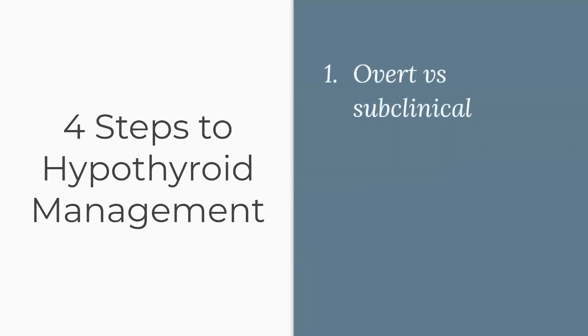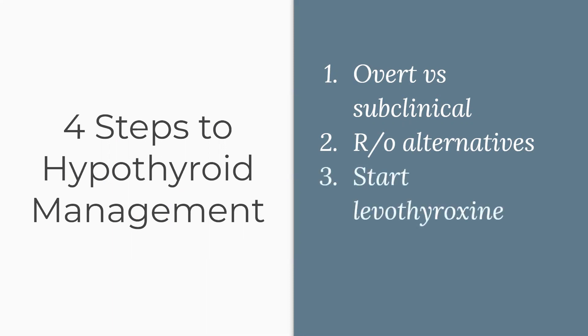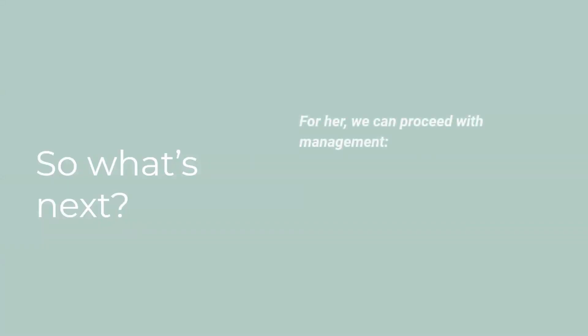So the four steps to hypothyroid management: number one, overt versus subclinical — high TSH with low T4, or high TSH with normal T4 and no symptoms? Number two, rule out alternative causes — does the clinical picture make sense? Number three, start levothyroxine — the main treatment. Number four, monitor labs and symptoms. Going back to Janelle: we can proceed with management. Her TSH is less than 10 but she is symptomatic — weight gain, irregular menses, and fatigue. She's also had treatment in the past. So we're starting 50 micrograms and rechecking labs in six weeks.